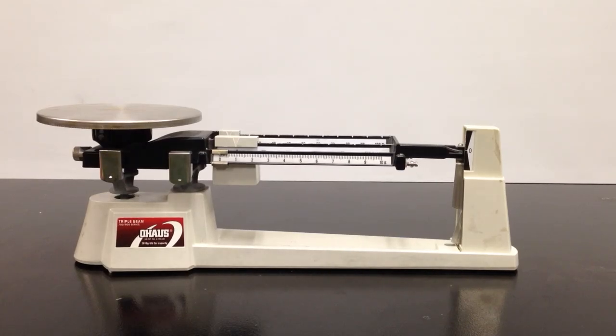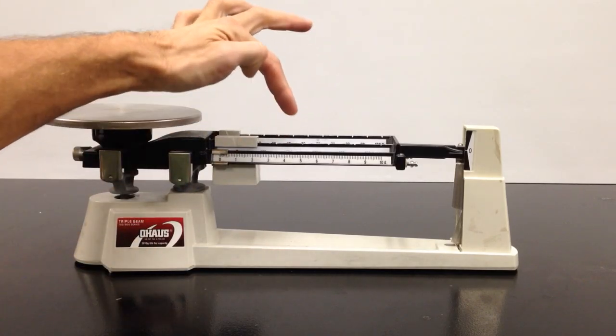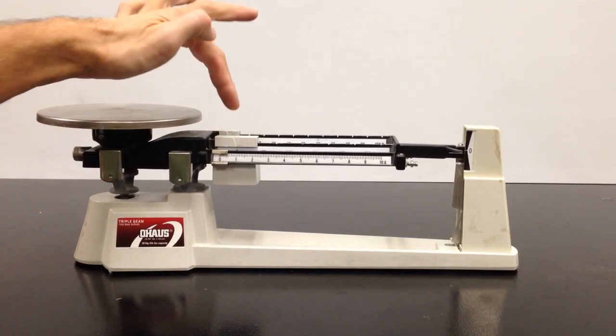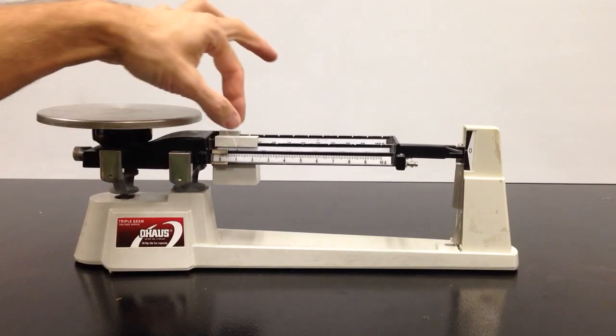Welcome to Super Simple Science. Let's look at the parts of a triple beam balance. It's called a triple beam balance because you have one, two, three beams, and on those beams sits one, two, three weights.